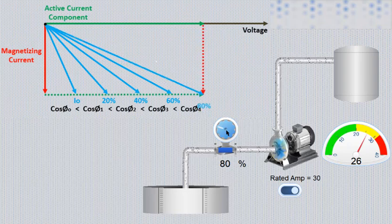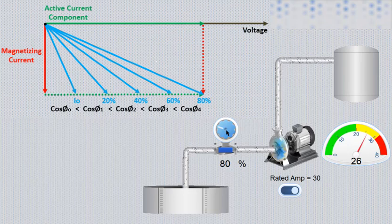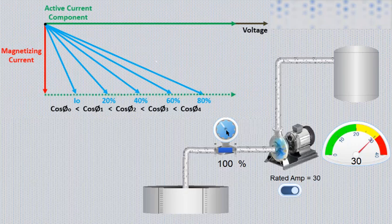As power factor is improved with load, the efficiency of motor is also increased. Running motor at rated power draws rated active component of current, and also rated reactive or magnetizing current.